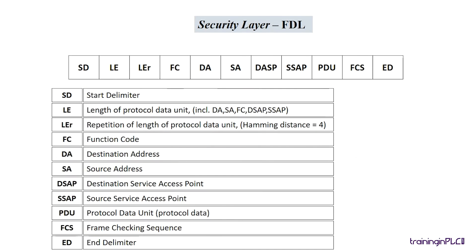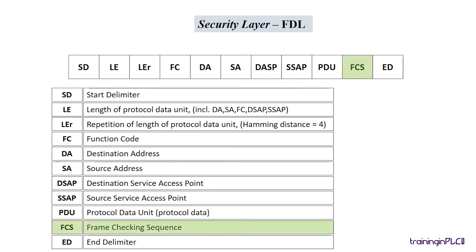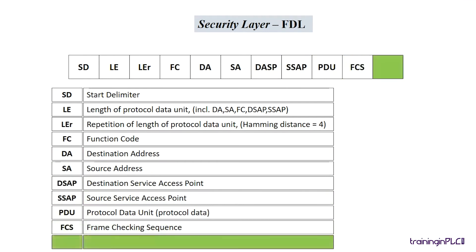The frame has: SD start delimiter, LE length of data, LA repetition of length data, FC function code, DA destination address, SA source address, DSAP destination service access point, SSAP source service access point, PDU protocol data unit, protocol data, FCS frame checking sequence, ED end delimiter.